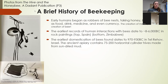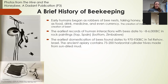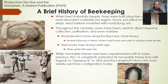Those pictures are both from The Hive and the Honeybee, a Dadant publication originally written by L.L. Langstroth himself. As animal husbandry began, the earliest domestication of bees dates back to 970 to 930 BC in Tel Rehab, Israel. The apiary contains somewhere between 75 and 200 cylindrical hives made of sun-dried mud. It's not exactly known how many because it's kind of hard to tell — it's basically a bunch of mud that eventually disintegrates after all those years.